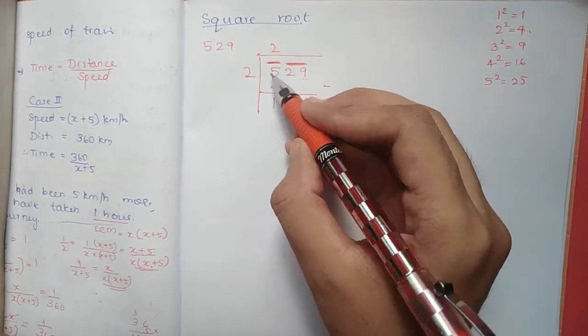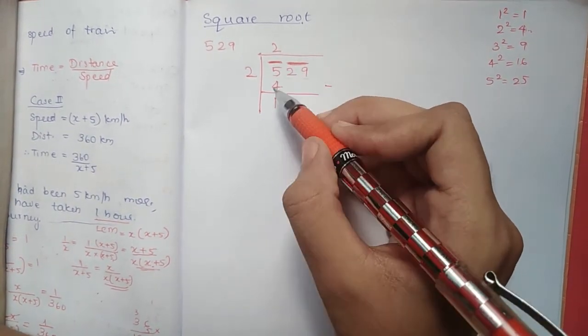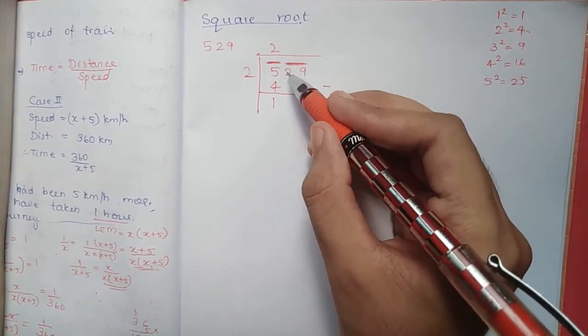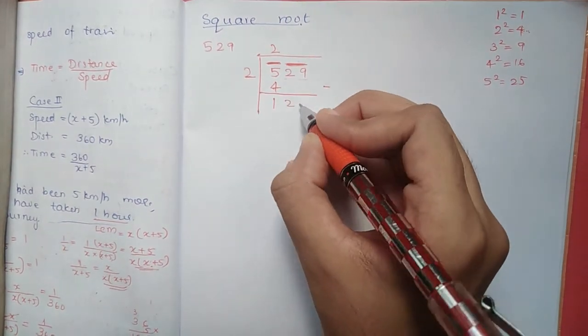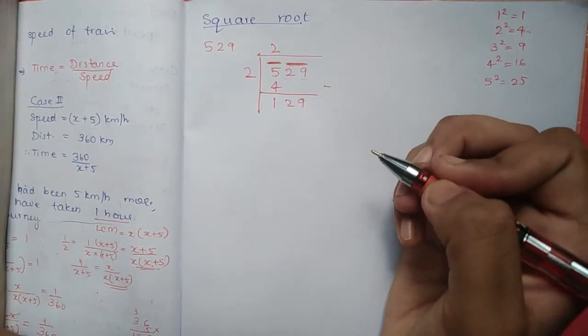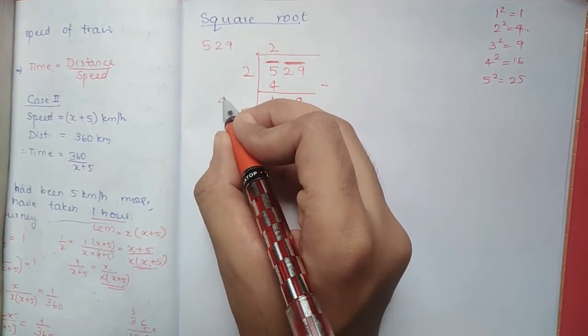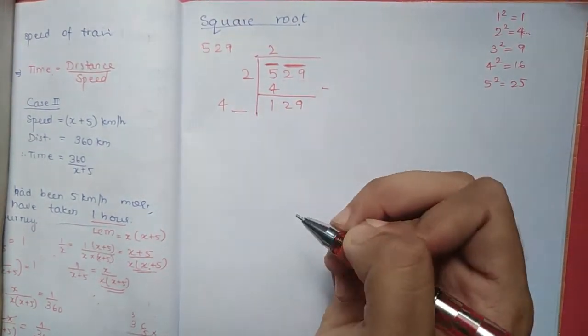The first line is minus. The second line will be minus. It will be 129. The second line will be double. It will be 4. The second line will be dash.